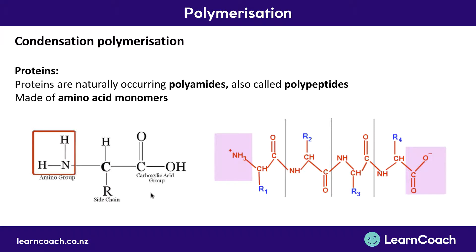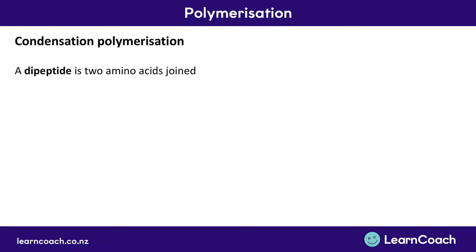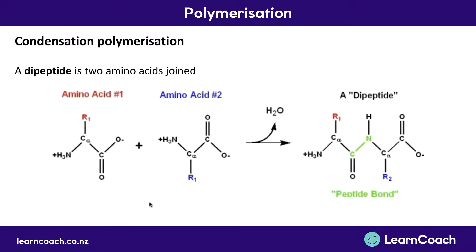This is an example of one monomer with two different functional groups coming together to form a polymer. As well as polypeptide, you'll occasionally see the word dipeptide. A dipeptide is simply two amino acids joined together rather than a long chain. You've got an amine group and a carboxylic acid group, they join together, and H₂O is released as part of that condensation reaction. You end up with a dipeptide with only one peptide bond in the middle holding it together.